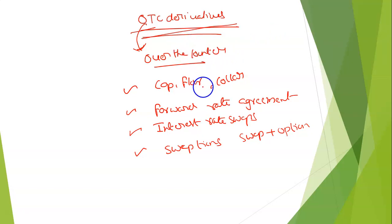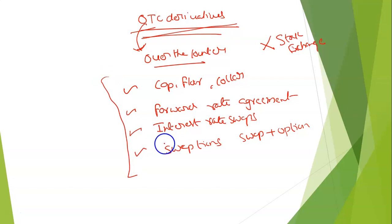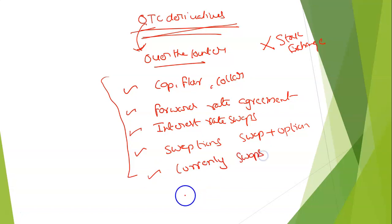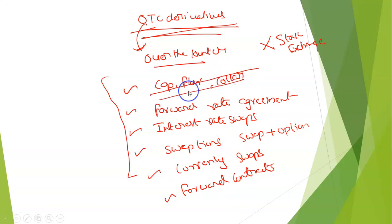These instruments are normally traded in the over the counter market — not in the stock exchange. These are hedging instrument tools for protecting your risk. We also have currency swaps and forward contracts. In this topic, we will be discussing only cap, floor, and collar.